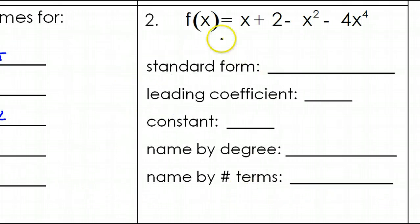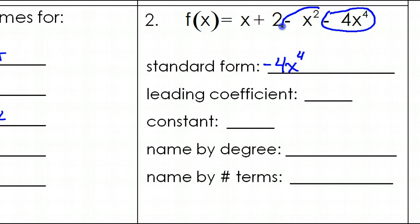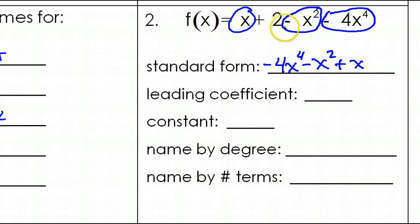Problem number 2: standard form. If you have a polynomial in standard form, it should be in order from the highest degree term to the lowest degree term. The highest power is 4th power, so first I would put negative 4x to the 4th power — notice the sign goes with it. Next power I see lower than that is negative x squared, so that comes next. There is no third power. Then I see this plain x, so I'll put plus x. And finally, I see the constant term, plus 2.